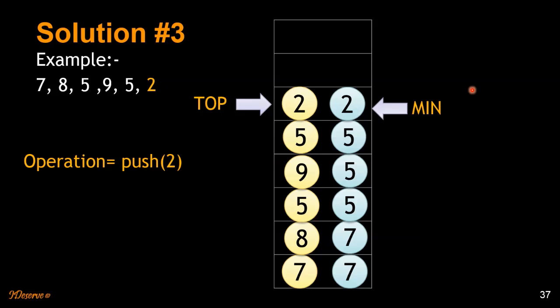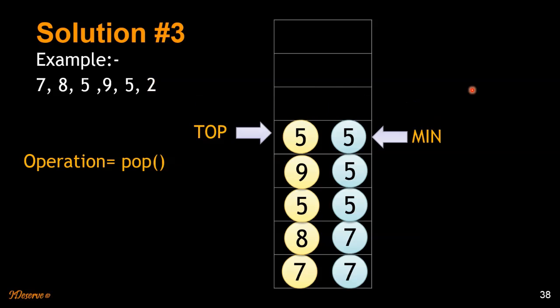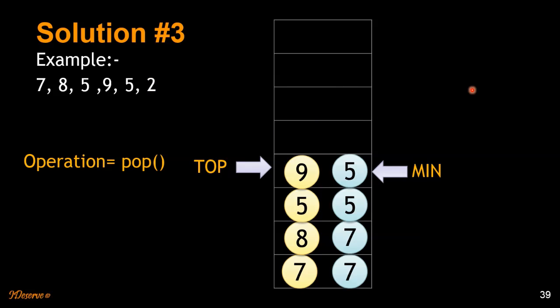When getting the min element, we return the top node's min value. So top.min gives the minimum element for the stack, and top.value gives the top value. Each node tracks both its value and the running minimum, so all operations remain O(1).